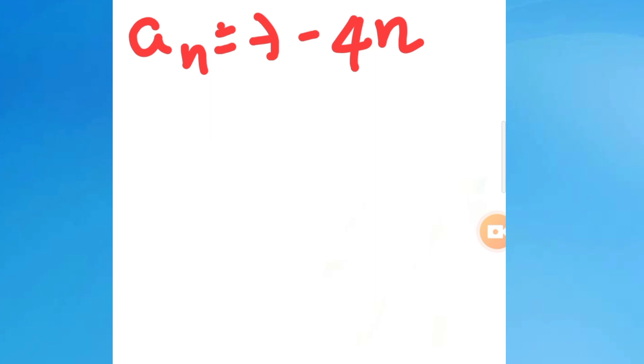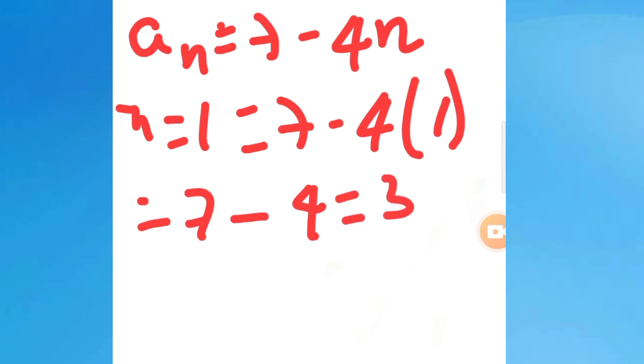When n value is one, in the place of n I need to put 1. Therefore that will be equals to 7 - 4 × 1. Therefore that equals 7 - 4 = 3. This is called the first term, a₁.